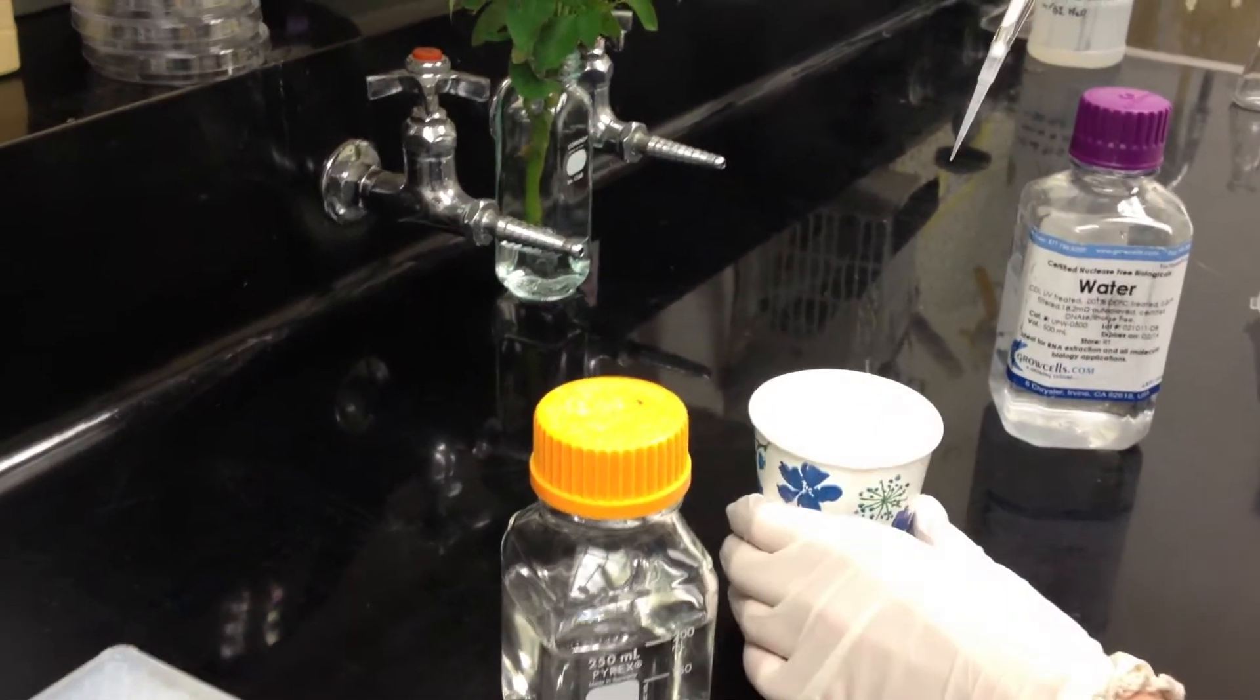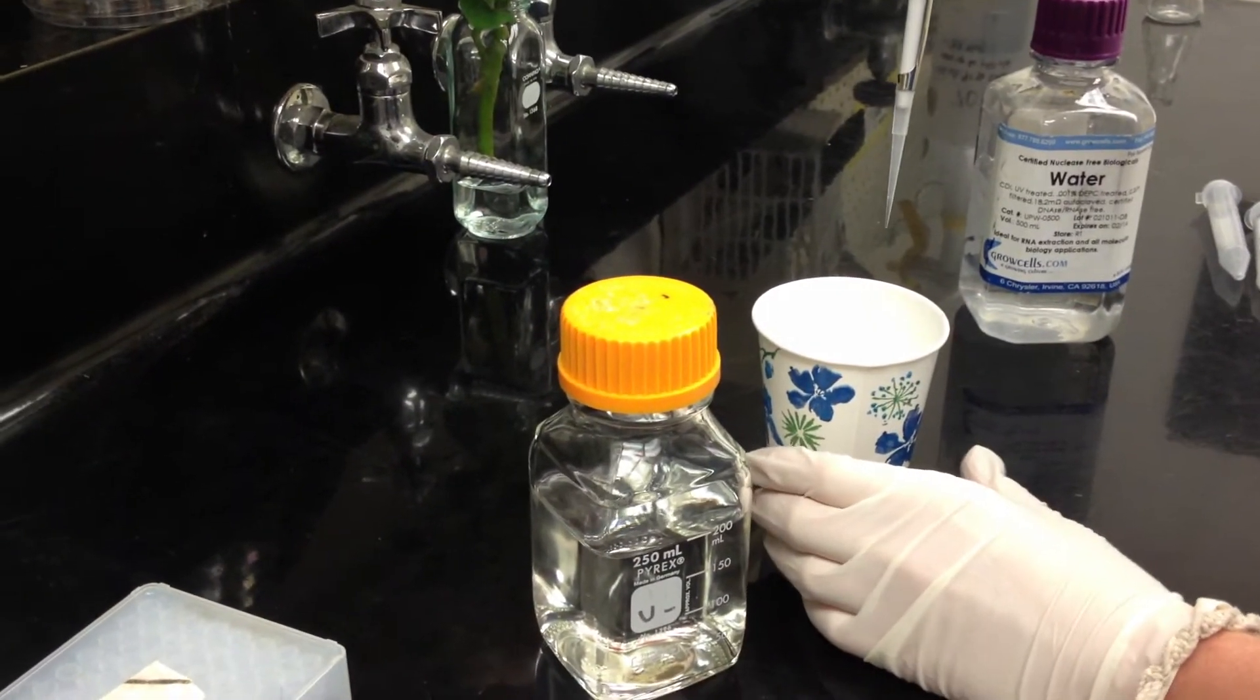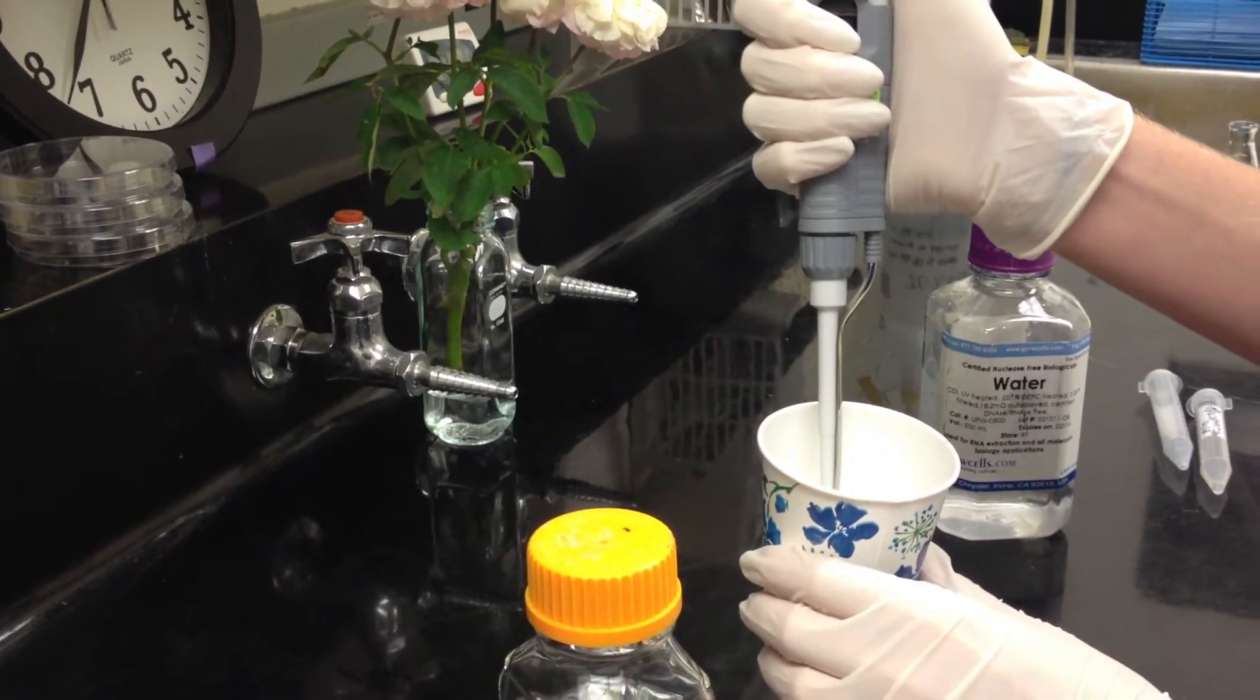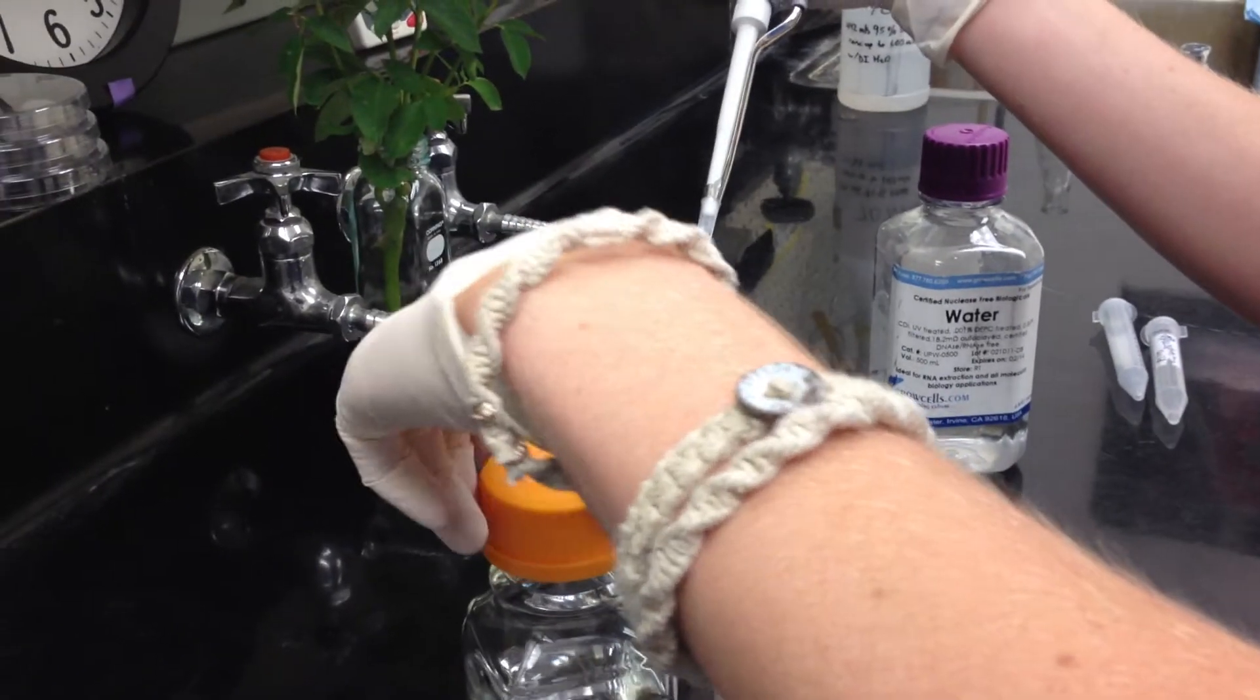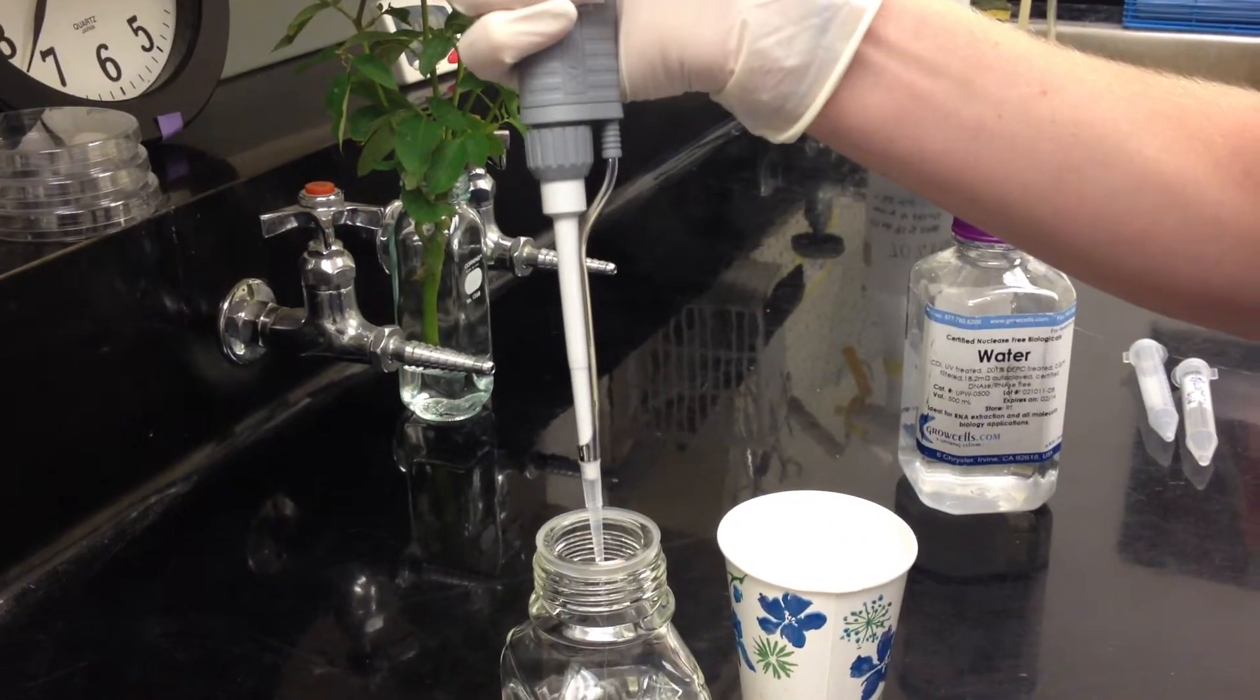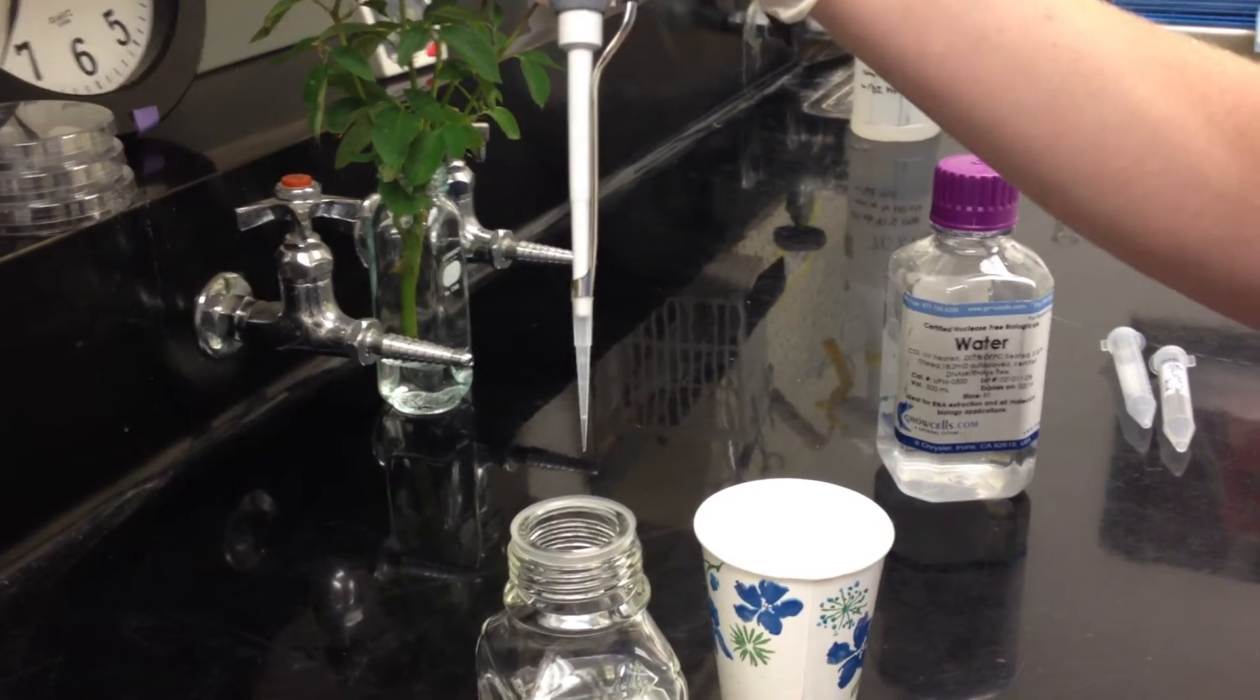We're going to press down to the first stop, and you're going to draw up 200 microliters. Then you're just going to dispense it into the bottle. You're going to do that 9 more times for a total of 10 times.